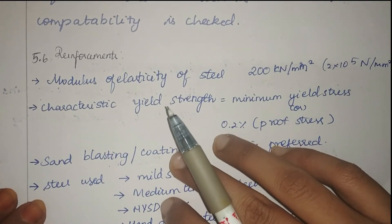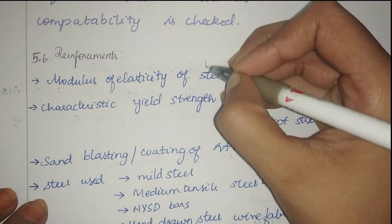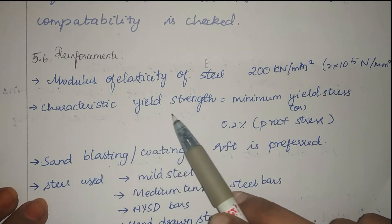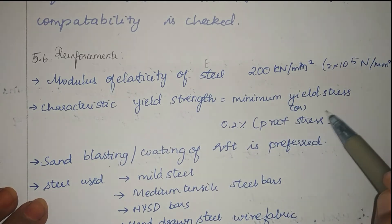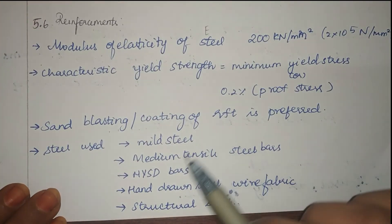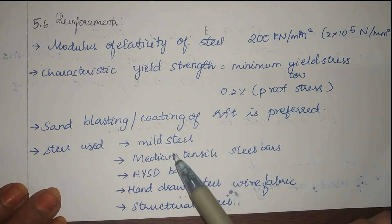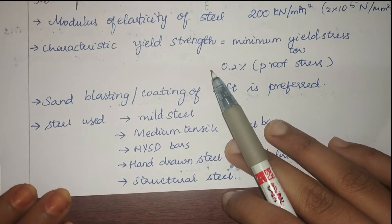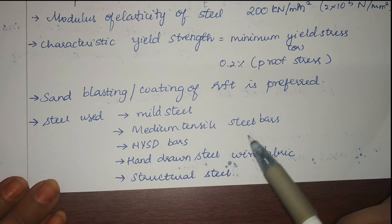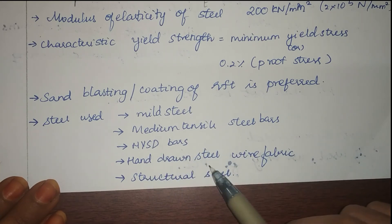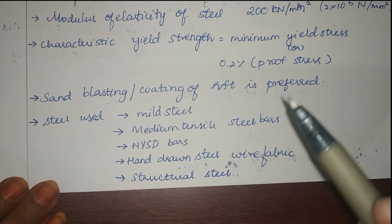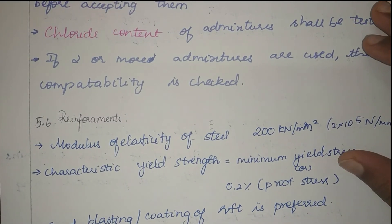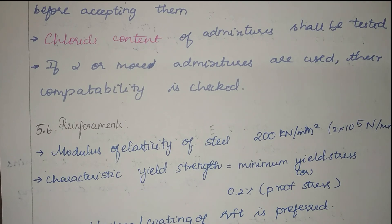The next material is reinforcement. The modulus of elasticity E of steel is 200 kN/mm² (2×10⁵ N/mm²). The characteristic yield strength is the minimum yield stress or 0.2% proof stress. If reinforcements are not up to standard, sandblasting or coating can be done to enhance their quality. Types of steel used include mild steel, medium tensile steel bars, HYSD bars, hard-drawn steel wire fabric, and structural steel. This concludes Chapter 5 on materials; the next video will cover Chapter 6 on concrete.